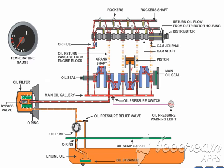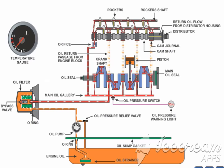After filtration, the clean oil flows into the main oil gallery in the cylinder block. The main oil gallery supplies oil to crankshaft journals and the cylinder head. From the crankshaft journals, the oil is supplied to big end bearings through small passages built into the crankshaft.